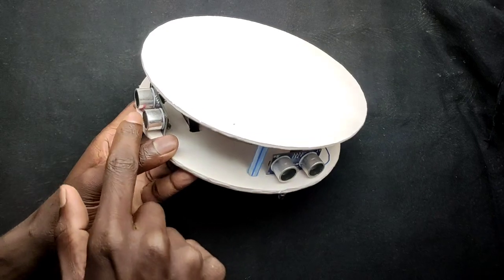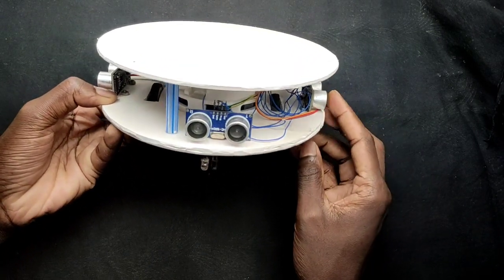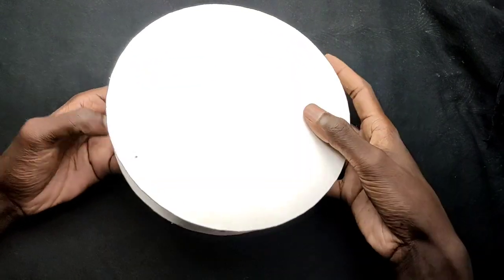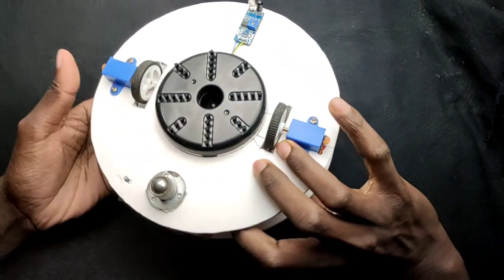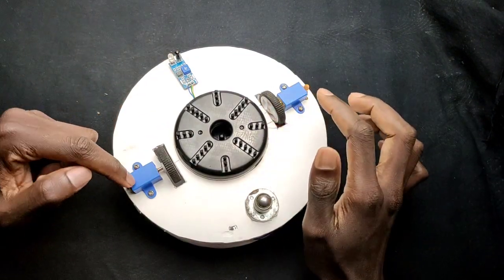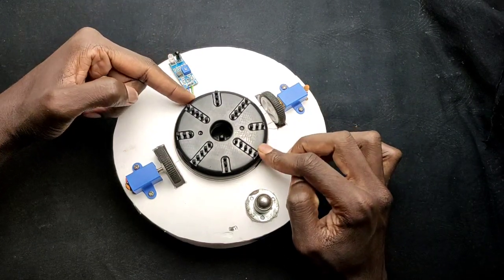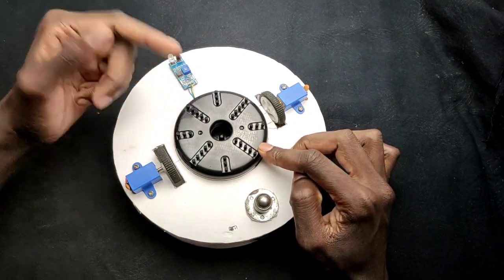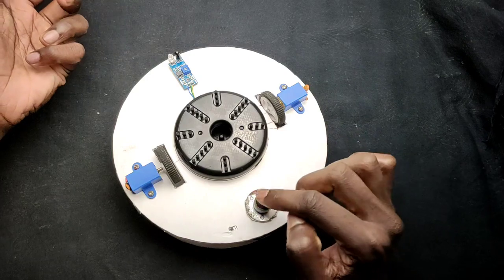This is our vacuum cleaner robot. It has three ultrasonic sensors for detecting obstacles. On the downside, the board has an IR module for detecting the floor and two DC motors for movement. In the center, I placed the vacuum cleaner. Also, the bot has a caster wheel for balance.